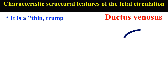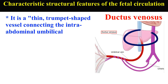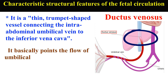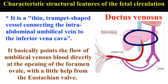Ductus venosus. It is a thin, trumpet-shaped vessel connecting the intra-abdominal umbilical vein to the inferior vena cava. It basically points the flow of umbilical venous blood directly at the opening of the foramen ovale, with a little help from the Eustachian valve.